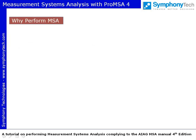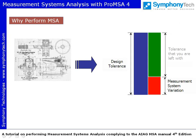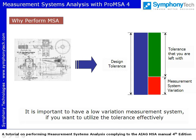You need to produce parts within the specified tolerance. Measurement system variation eats into your tolerance zone. An excessively large measurement error leaves you with very little tolerance for the process. Your judgment can go wrong — you stand a real risk of rejecting good parts or even accepting non-conforming ones. It is important to have a low variation measurement system if you want to utilize the tolerance effectively.